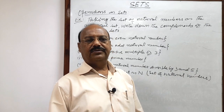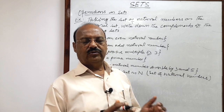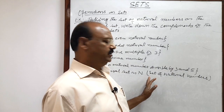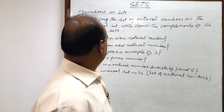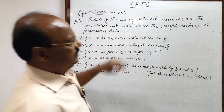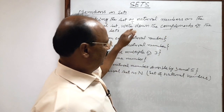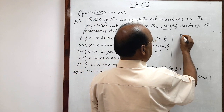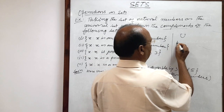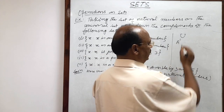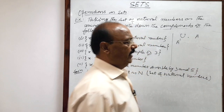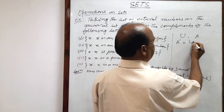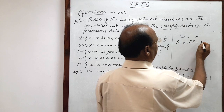The set of natural numbers consists of counting numbers starting from one: 1, 2, 3, 4, 5, 6, 7, and so on up to infinity — it has an infinite number of terms. To find the complement: if we have a universal set U and any set A, then A complement equals U minus A.